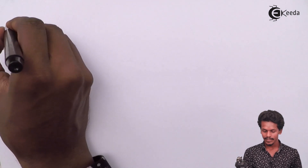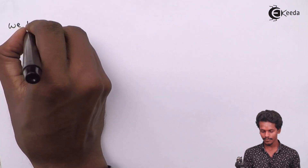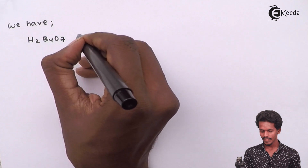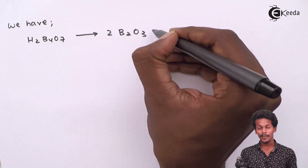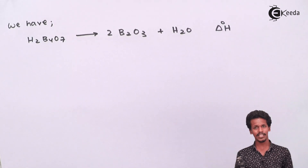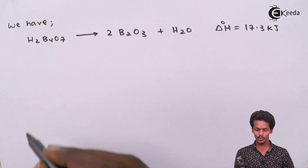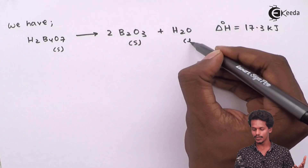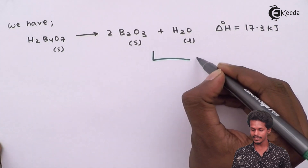So we take reference reaction 3 as our Equation 1: H₂B₄O₇ gives us 2B₂O₃ plus H₂O, with ΔH = 17.3 kJ. We also note the physical states — solid, solid, and liquid respectively. This will be Equation 1 in our working.